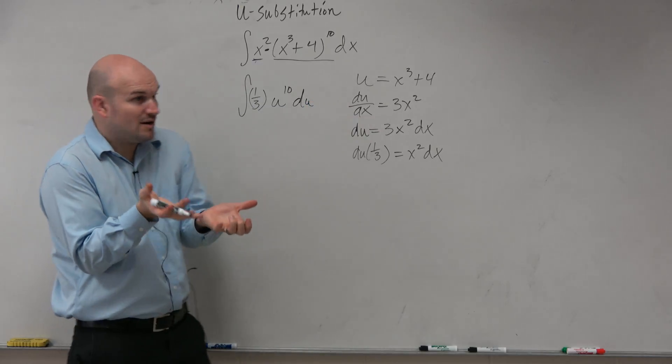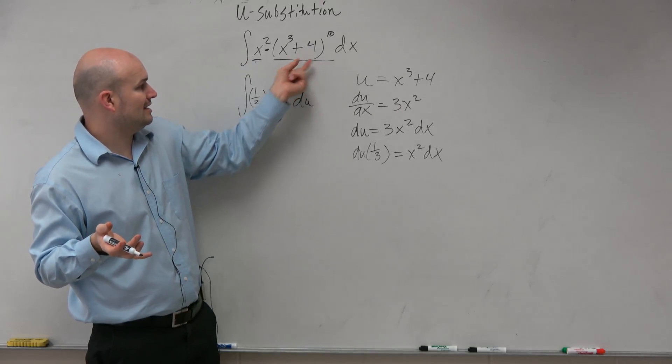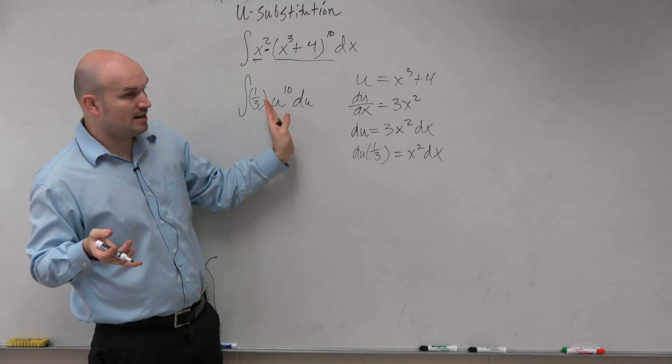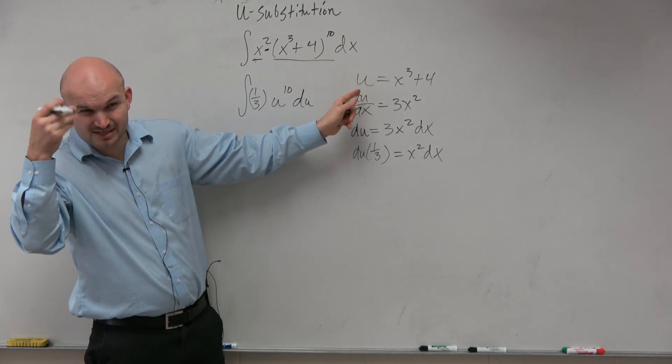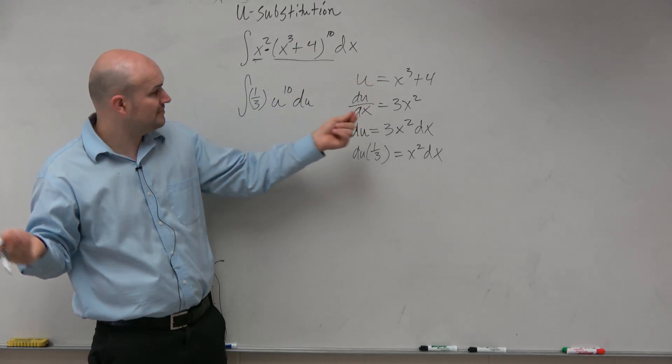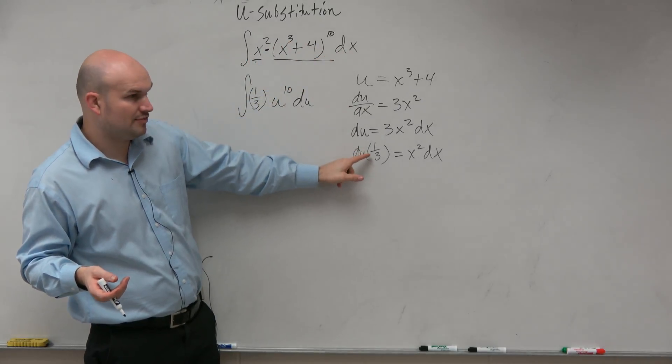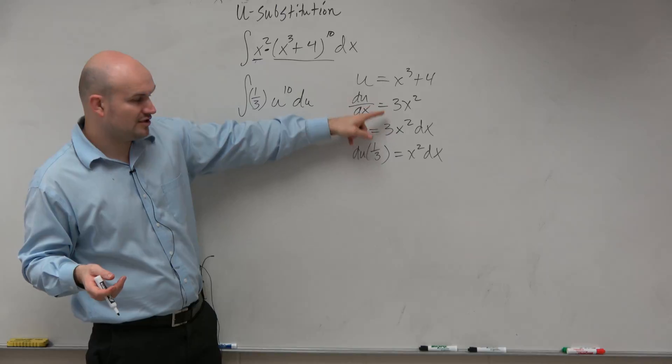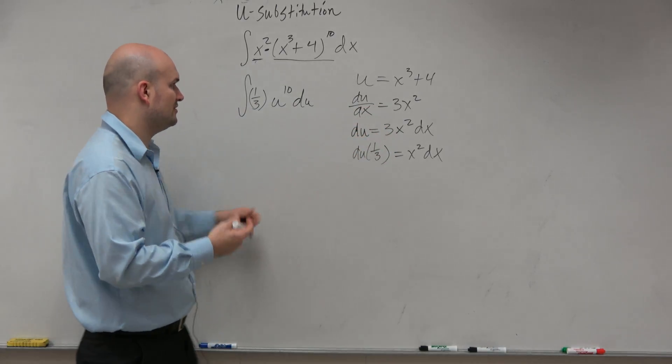But do you guys see how I have not changed everything. I'm just replacing it. I'm taking this big function, and I'm rewriting it as u to the 10th power, where I'm substituting in x cubed plus 4 as u, because that just makes the antiderivative a little bit easier to do. And then I am replacing x squared dx with 1 third du. And again, you don't have to show all this work. The better you get at this, the faster you can just do this without having to show that.